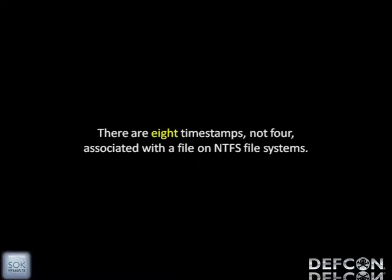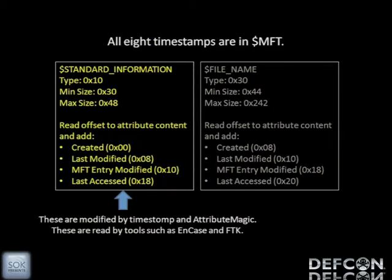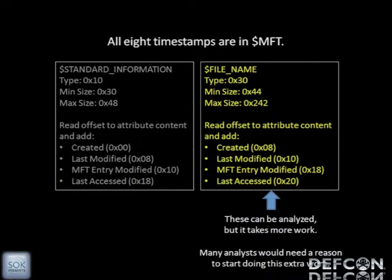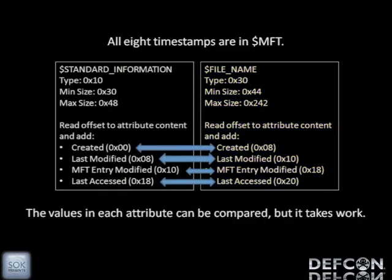There are eight timestamps on NTFS systems. There are four timestamps under the Standard Information attribute, identified by hex number 10 — those are the ones picked up by forensic tools, and those are the ones Timestomp and Attribute Magic hit. There's another set of four timestamps under attribute number 30, under File Name. Those four match exactly what's in Standard Information. The problem is when you timestamp something, it doesn't modify the File Name attribute as well. So when you use timestamping tools, you're not going through the Windows API, and Windows doesn't always update both, leaving things out of sync.